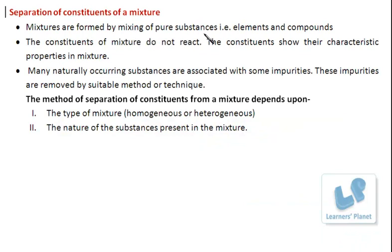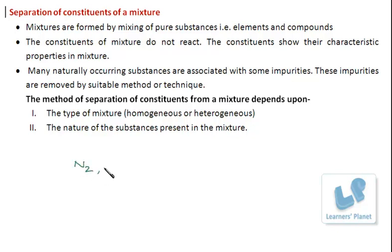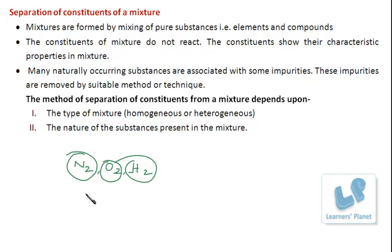Mixtures are formed by mixing of pure substances — elements and compounds. The constituents of a mixture do not react and show their characteristic properties. They retain their properties, unlike compounds which are formed by the reaction of elements. A compound is a pure substance with altogether different properties from its elements. For example, air is a mixture of nitrogen, oxygen, hydrogen and many other gases — these gases retain their properties, do not combine chemically, and can be separated from air by physical methods.